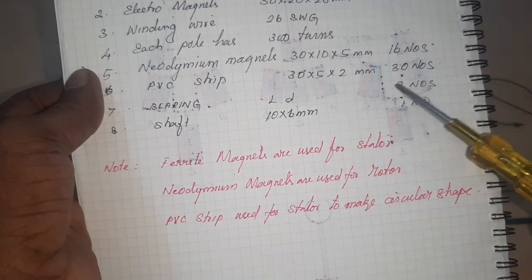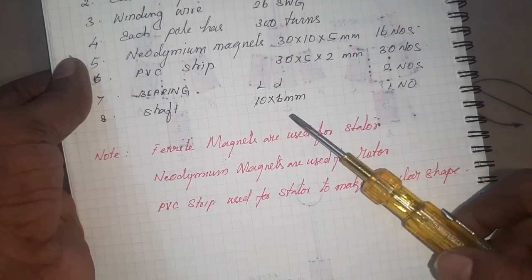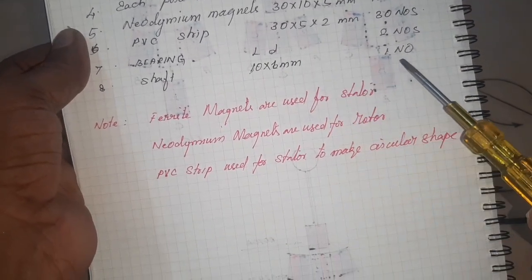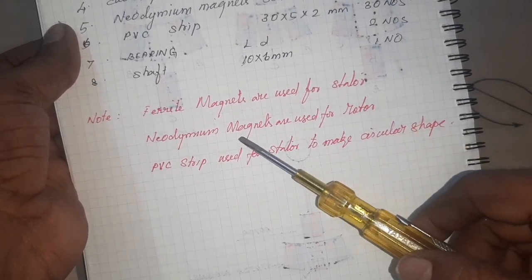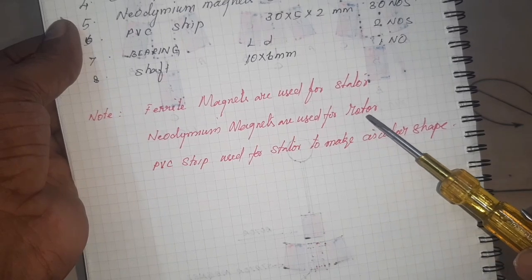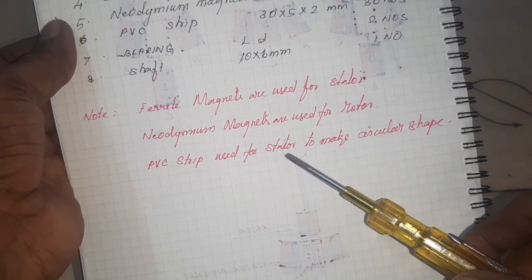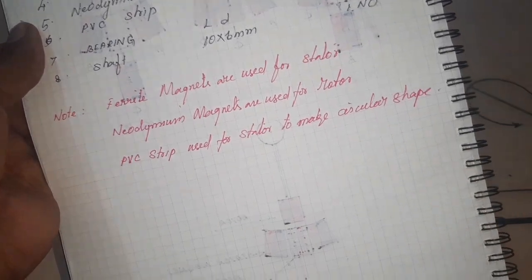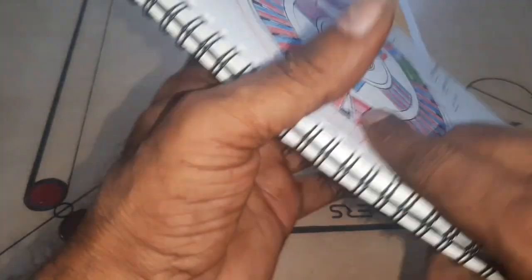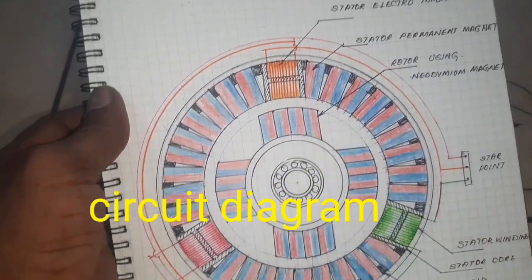PVC strip 30 numbers. Bearing 2 numbers. Shaft 10 x 6 mm, 27 numbers. The ferrite magnets are used for stator, neodymium magnets are used for rotor, and the PVC strip is used for stator to make a circular shape. Now look at the construction of the BLDC motor.